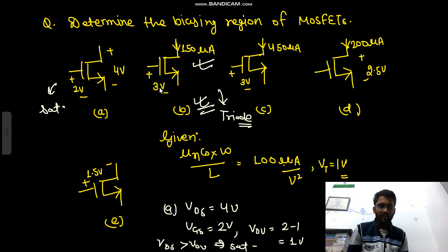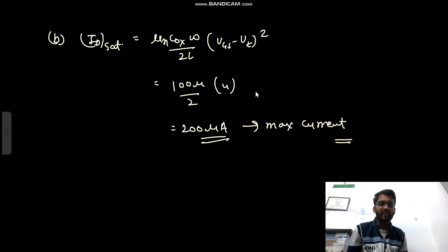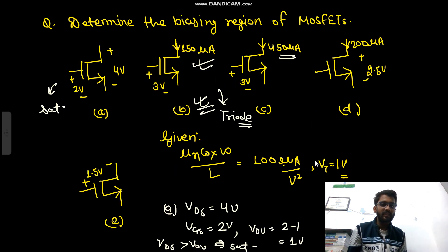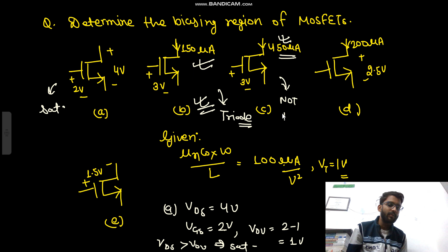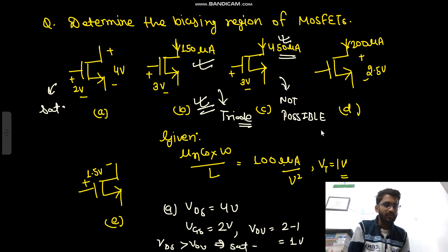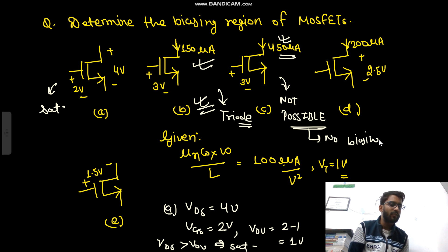For example C, the same configuration is used but now the current is 450 µA. We just derived that the maximum current can only be 200 µA, so 450 µA is simply not possible. This is not a valid biasing configuration — no biasing.